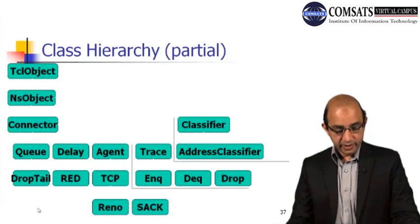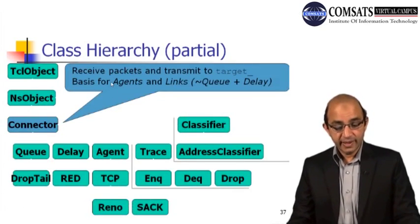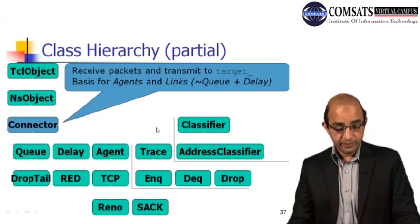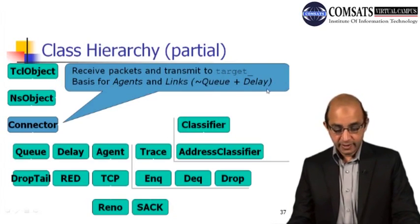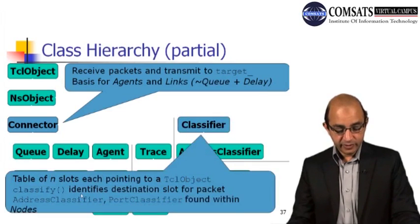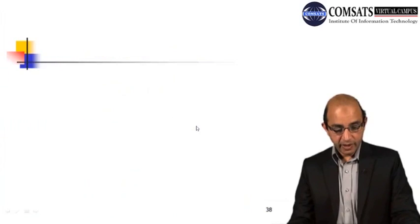Here is the class hierarchy again: TCL object, connector. A connector receives packets and transmits them to target — it is the basis for agents and links (queues plus delays). A classifier provides destination slot lookup for packets, classifying or finding the destination slot for each packet.